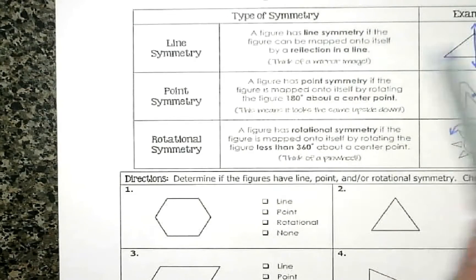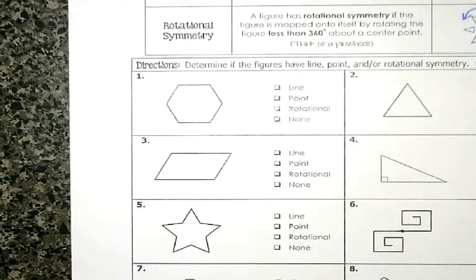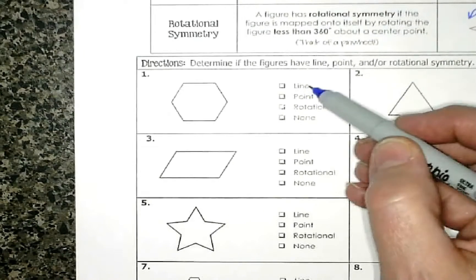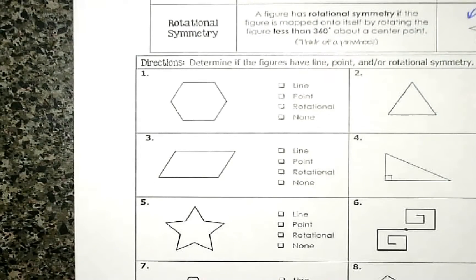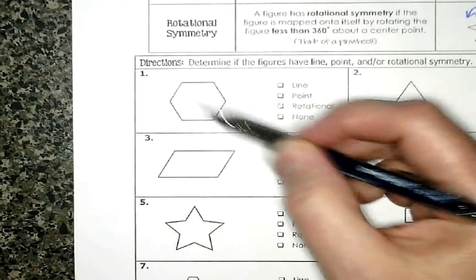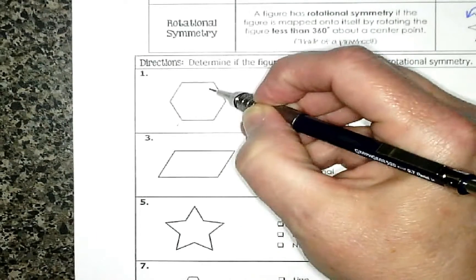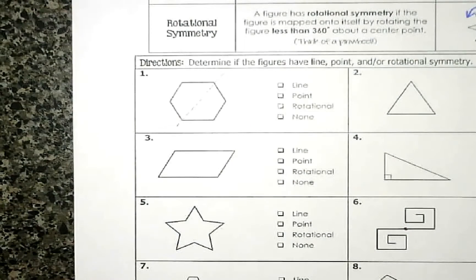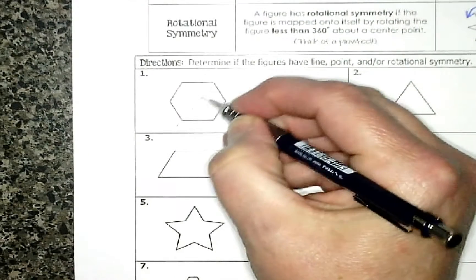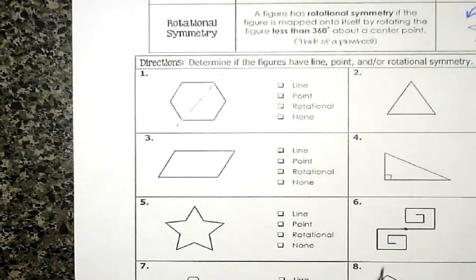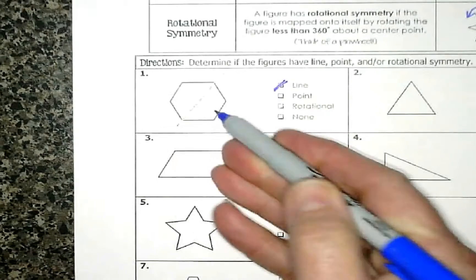Let's do line first. As a quick review: if I can draw a line so it's the same on both sides — kind of like a fold line — then it has line symmetry. Some figures only have one line of symmetry, some have a whole bunch. If I can even draw one, we'll count it as line. Looking at the first shape, I can draw a line here and there's actually a ton of them on this shape. This is a line of symmetry, so yes, this has line symmetry because it's the same on both sides.